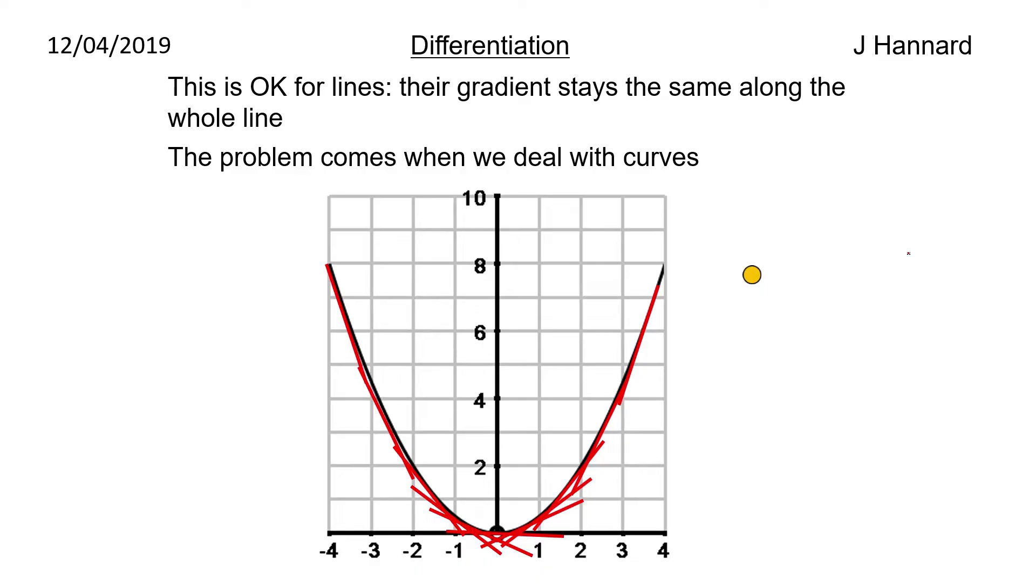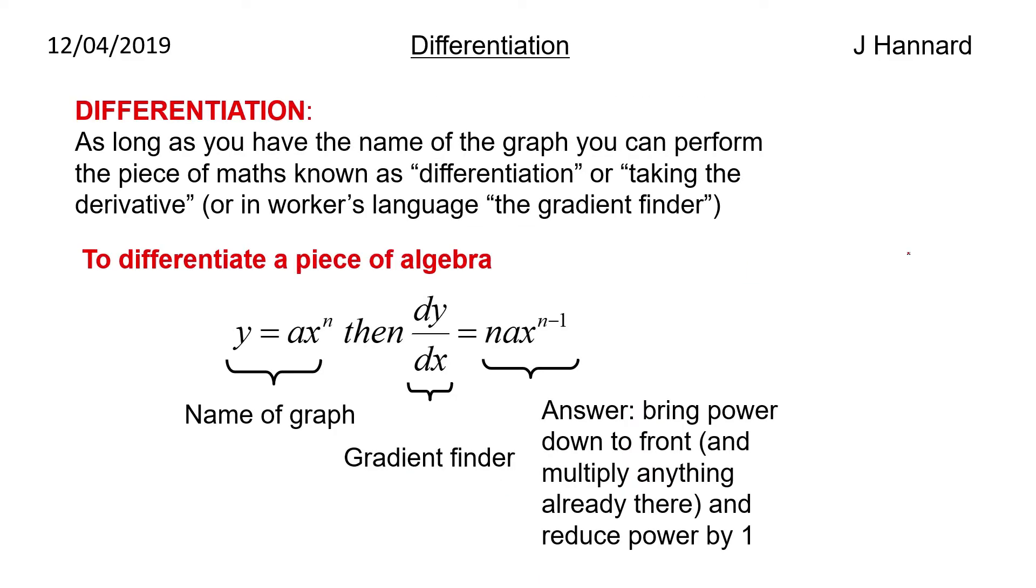So what happens if we had a piece of maths that meant that we could work out the gradient of this curve at any point? That is what we call differentiation. As long as you have the name of the graph you can perform the piece of maths known as differentiation or taking the derivative or as some people like to call it the gradient finder.